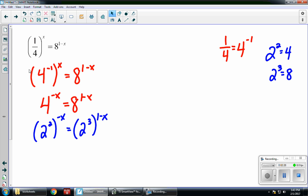Now a power to a power tells me to multiply. So I get 2 to the negative 2x is equal to 2. And I have to distribute this 3 to the 3 minus 3x.